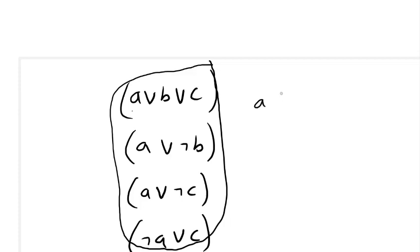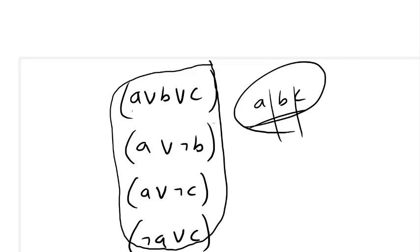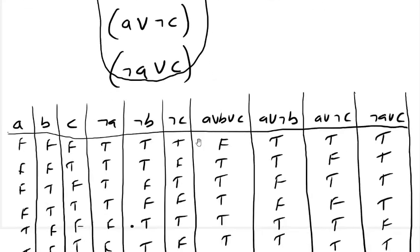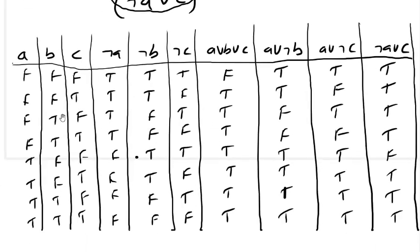If we are unable to find any world in which the assignment of A, B, and C makes all clauses true together, then we say the formula is not satisfiable. With three variables A, B, and C, we have eight combinations of assignments to check.